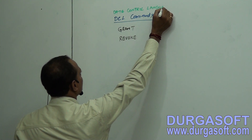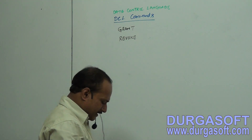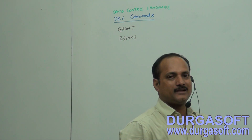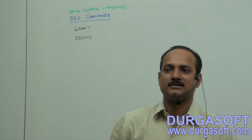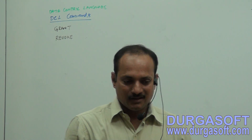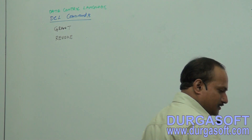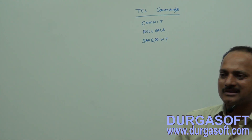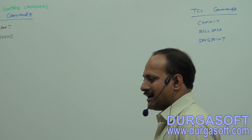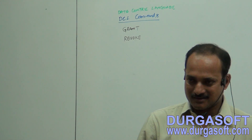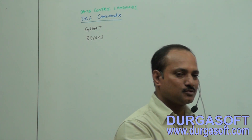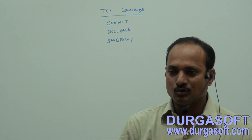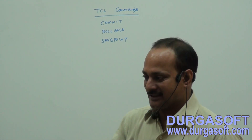In your database, you have so many types of objects and different user accounts. User 1 has his own objects, User 2 has his own objects. Every user needs security for their own objects. Some other user also needs security for his own objects — he doesn't want to allow other users to touch his objects.